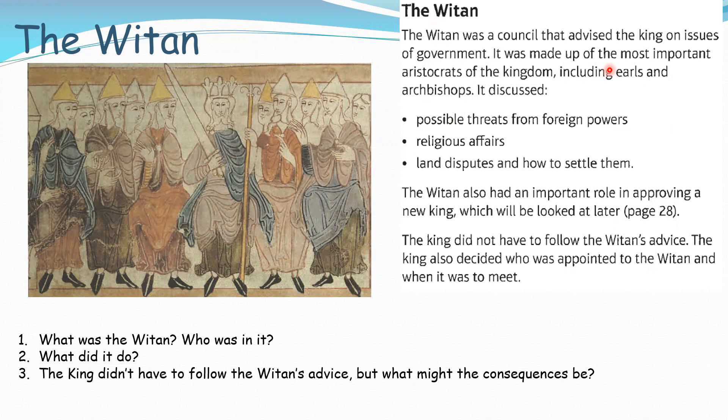It's also worth noting that when it came to deciding who would be king, the Witan voted amongst themselves which member would become the new king when the old one died. The concept of divine right of rule or hereditary kingship doesn't come in until William the Conqueror. Before William, the Witan decided who was going to be the king.